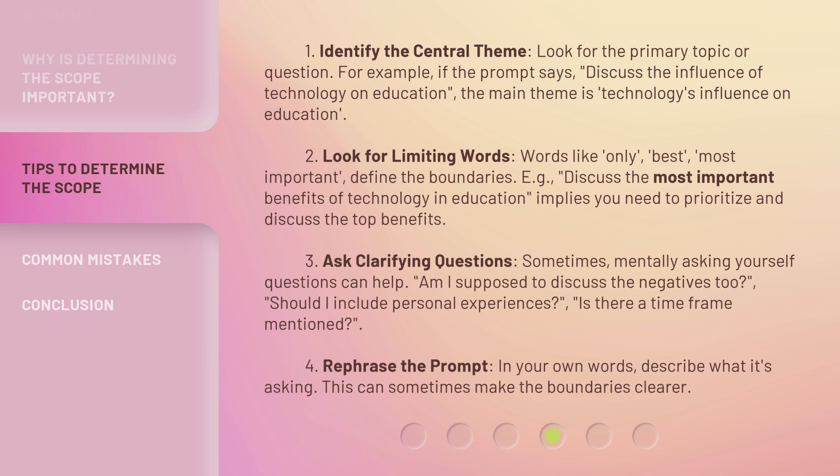Step 3: Ask clarifying questions. Sometimes, mentally asking yourself questions can help. For instance: Am I supposed to discuss the negatives too? Should I include personal experiences? Is there a time frame mentioned? Step 4: Rephrase the prompt. In your own words, describe what it's asking. This can sometimes make the boundaries clearer.